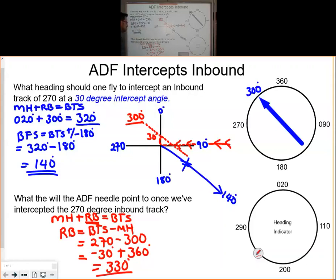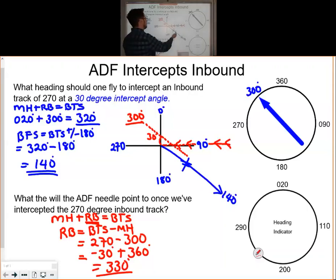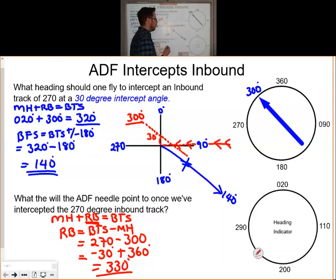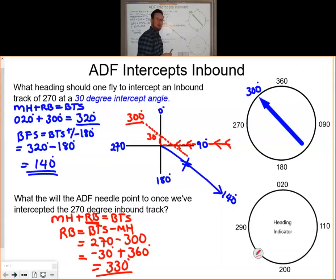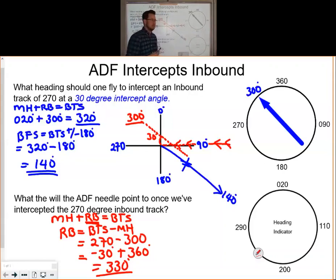Once your ADF needle pointer is pointing to 330 degrees, that is when we would make a left turn to a heading of 270 degrees. Once we've turned to a heading of 270 degrees, our ADF needle pointer would be pointing to north, indicating that we're flying directly to the station.